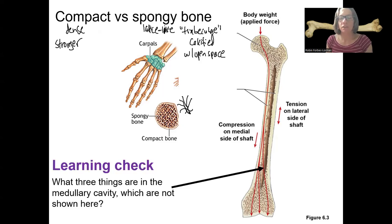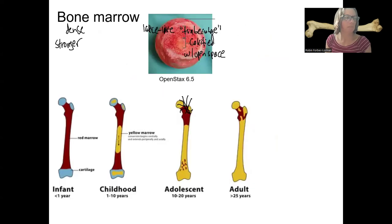Learning check for you here. This, in this picture, there are not things shown in the cavity. What three things could potentially be located in that medullary cavity? Okay. Here's one of them with two different types.